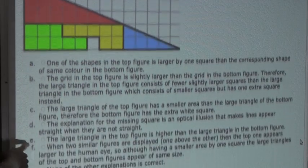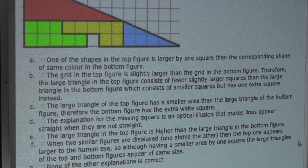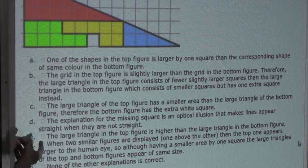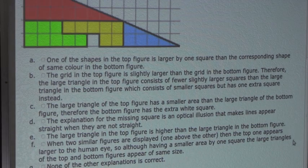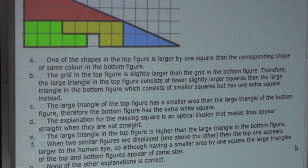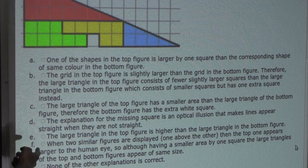Let's look at option D: the explanation for the missing square is an optical illusion that makes lines appear straight when they are not straight. This sounds kind of unusual, so let's first check options E, F, and G for a more plausible solution. Option E says the large triangle in the top figure is higher than in the bottom figure — this is false because both have the same height of five squares. So option E is not possible.